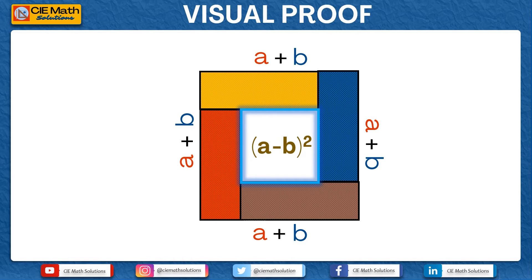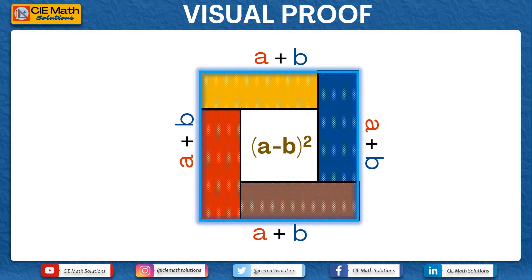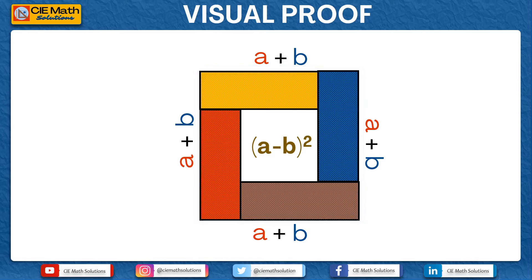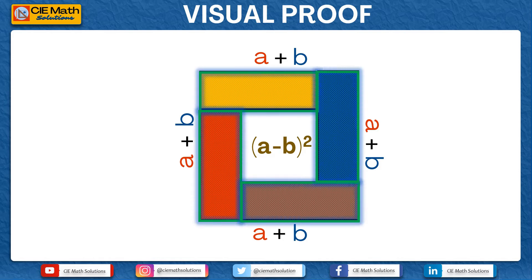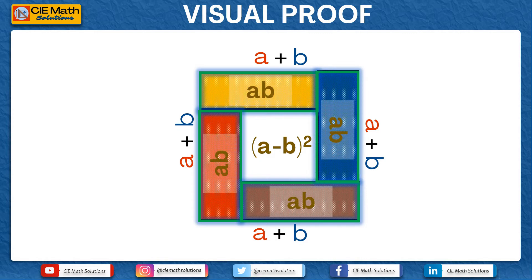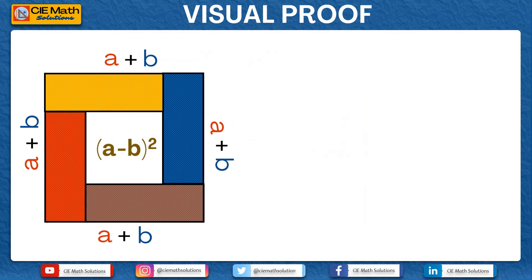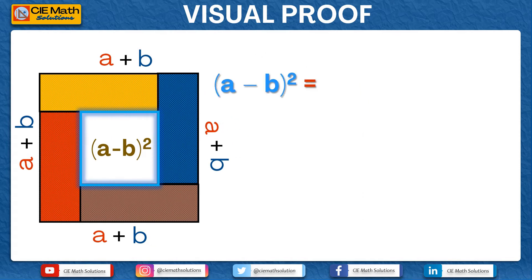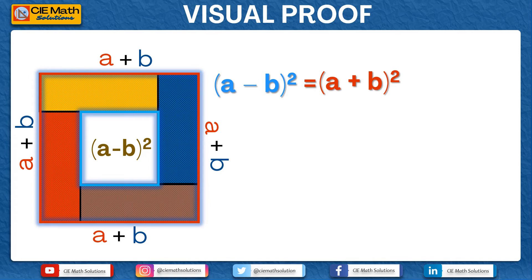We can also find the area of this figure in terms of the area of the other figures. Recall that the whole square has side A plus B, meaning its area is A plus B squared. Further, the area of each of the rectangles — the yellow, the red, the brown, and the blue — each has an area of AB. Looking at this figure, the area of the inner square, which is A minus B squared, is equal to the area of the whole square, that is A plus B squared, minus the areas of the four rectangles, that is 4AB.